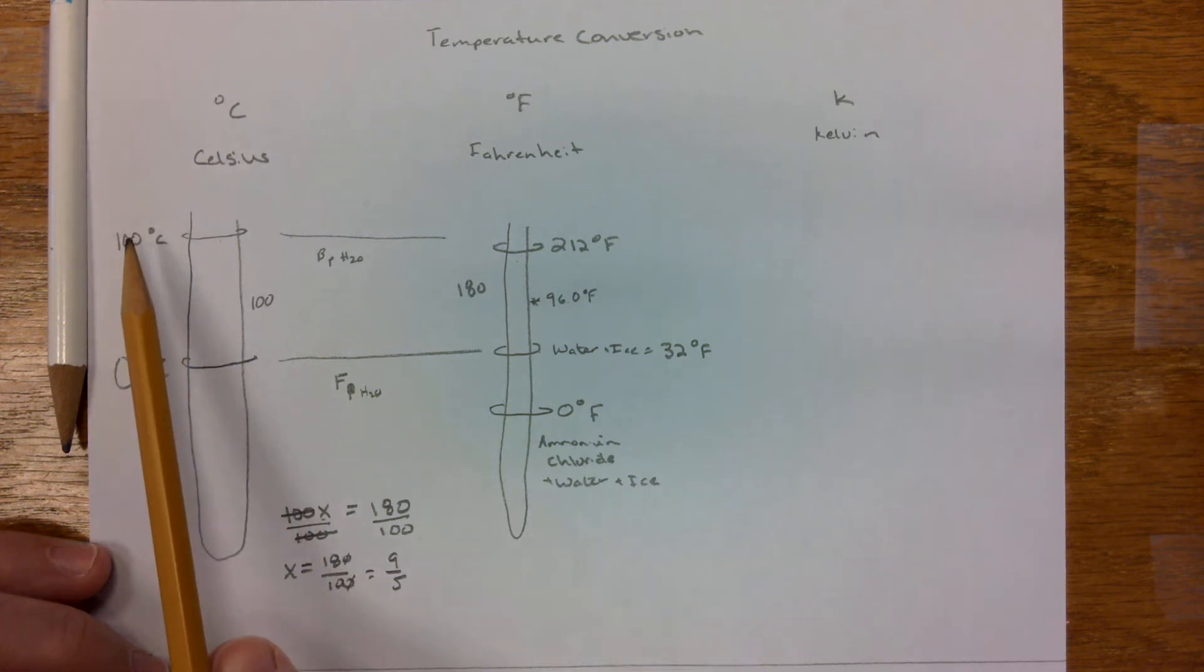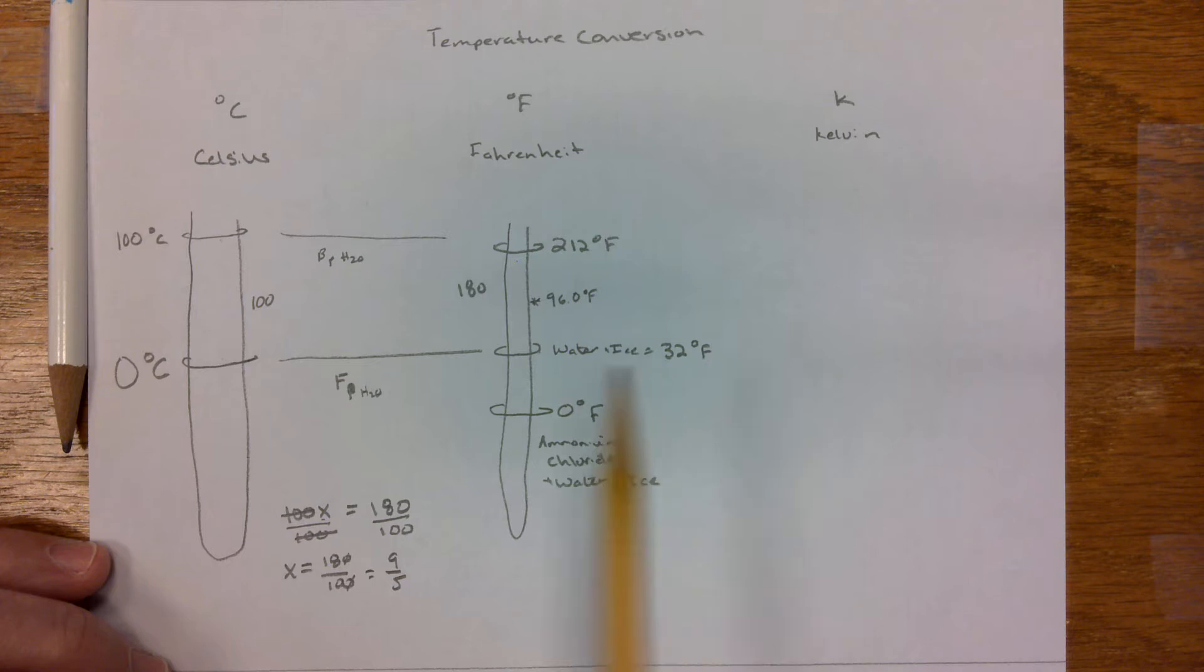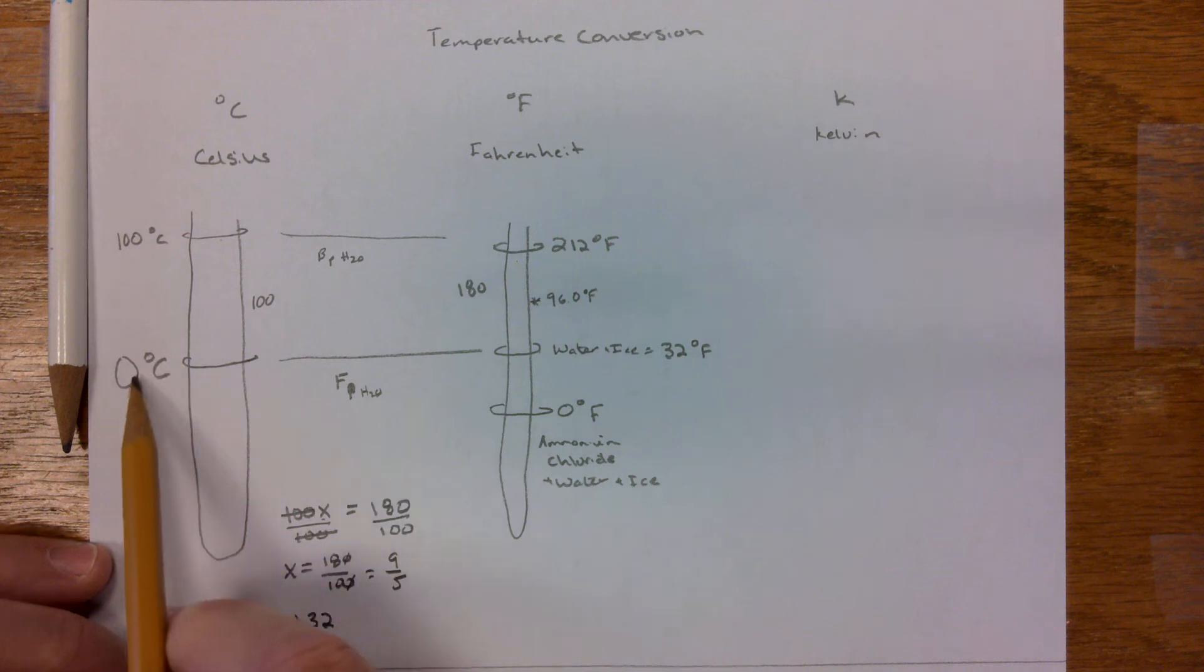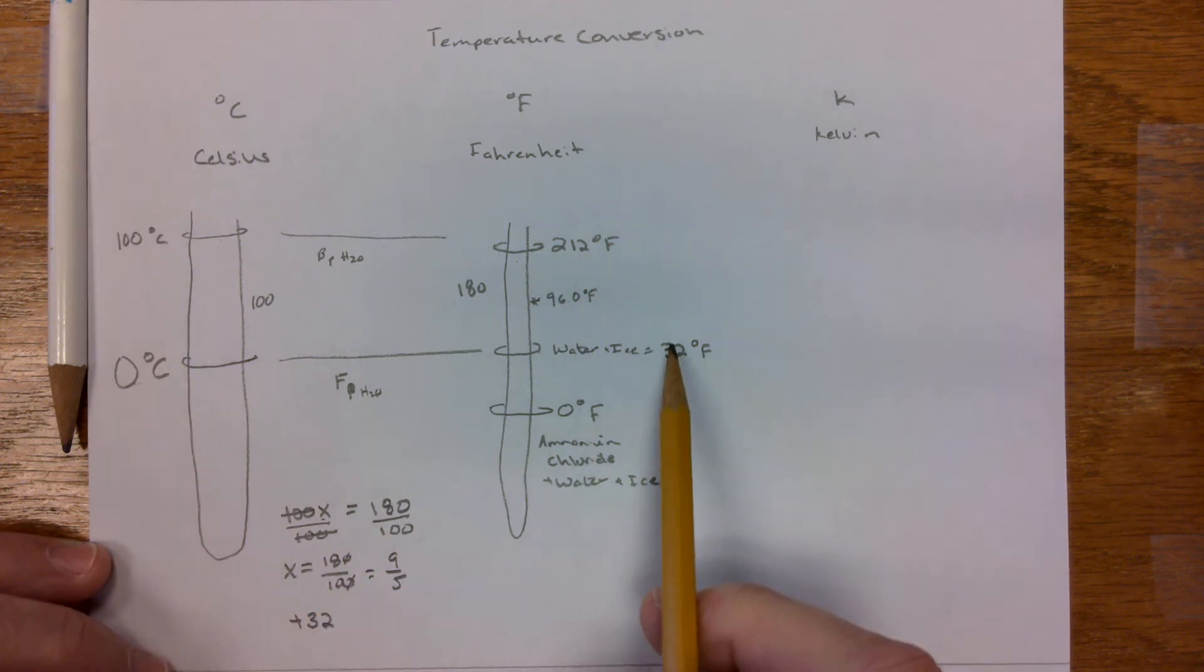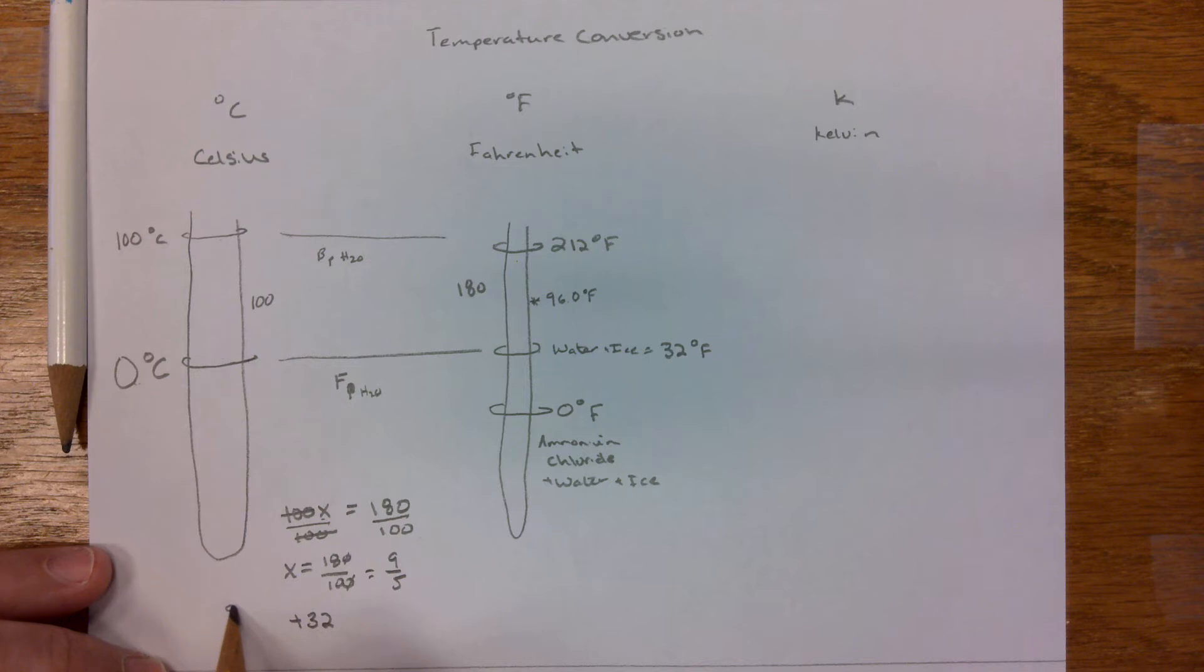That's fine. But if I multiply 100 by 9 fifths, I'm not going to get 212. If I multiply 0 by 9 fifths, I'm certainly not going to get 32, because anything times 0 is 0. So what we will do is we're also going to add 32, so that we can get 0 times 9 fifths plus 32. So we have 9 fifths degrees C plus 32 equals degrees Fahrenheit.